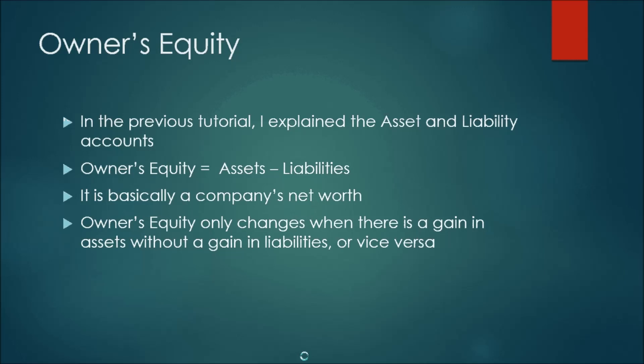The asset is what you own, and the liability is what you owe. There's also a third account in accounting called owner's equity. Owner's equity is basically what you own subtracted by what you owe — it's basically your net worth, the company's net worth.